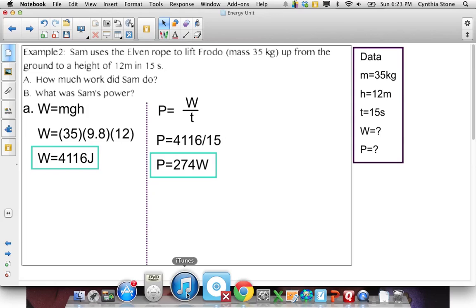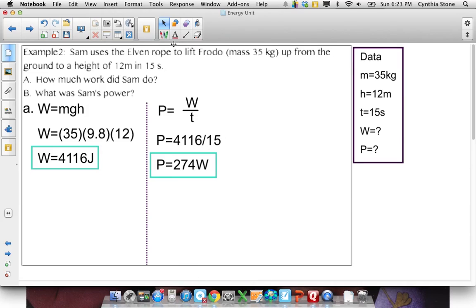Okay, in this question, Sam uses the elven rope to lift Frodo up from the ground to a height of 12 meters. It takes 15 seconds. So how much work does he do? So when you're lifting something, the key word there is lifting. When you're lifting, that means you use MGH. Okay, so it's Frodo's mass times 9.8 times the height. So there's his work.